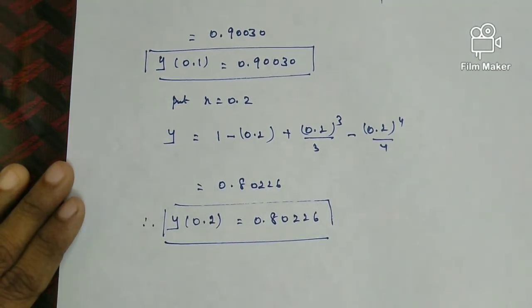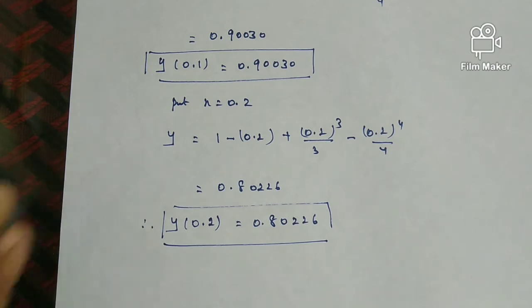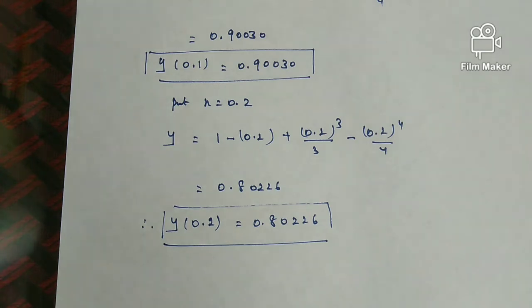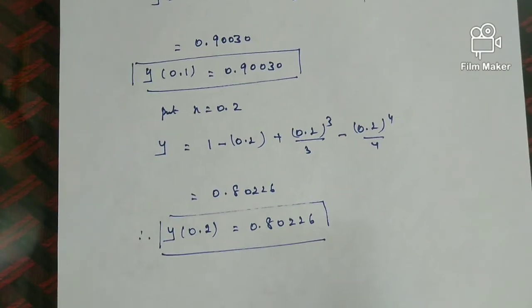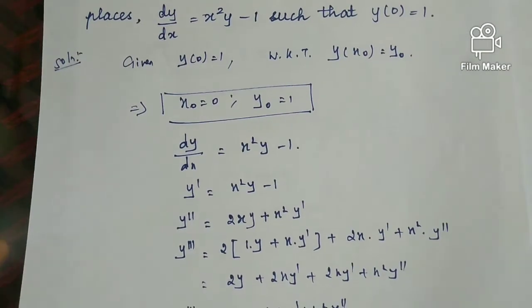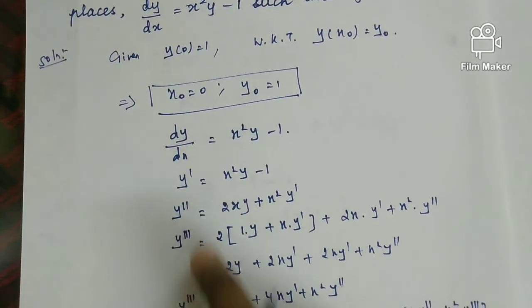This is how we write the result using the initial condition notation: y of x0 equal to y0, y of x1 equal to y1, y of x2 equal to y2. So y of 0.1 equals the answer, y of 0.2 equals the next answer, to 5 decimal places as specified in the question.